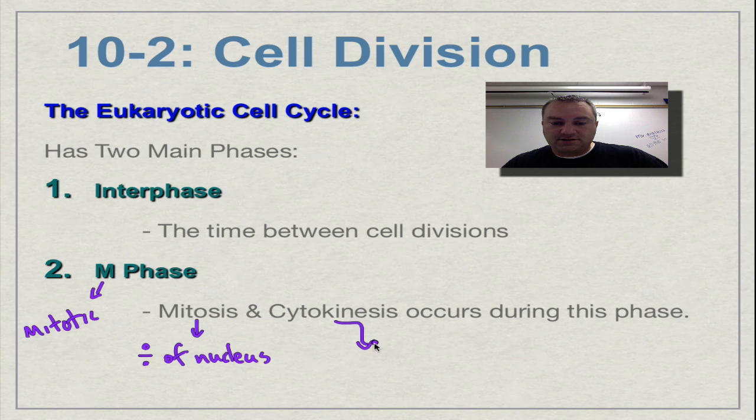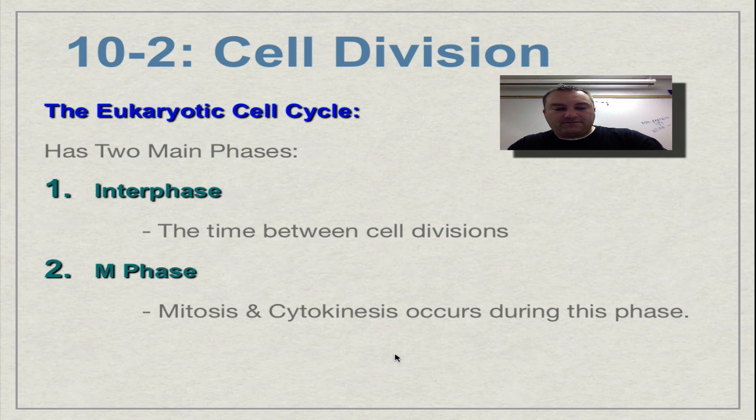And then cytokinesis, which is the actual cell division where the mother cell is going to split into two daughter cells. So the eukaryotic cell cycle contains normal everyday cell life, that's interphase, and then the actual reproductive part, which would be the M phase.